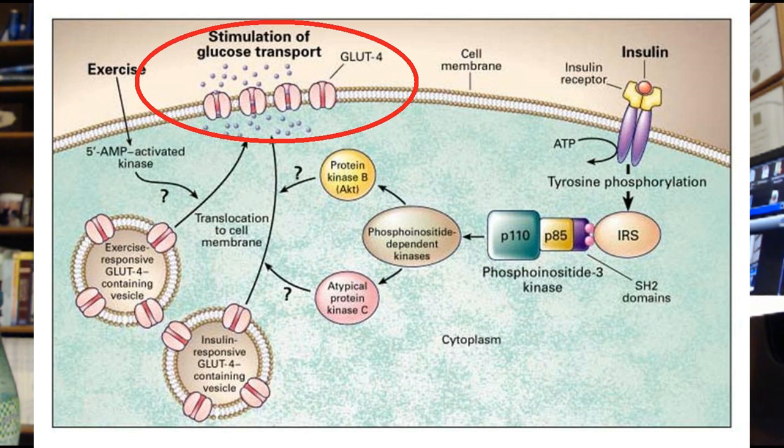Later on, after the glucose transporters get tired out, the kinesin-1 molecule comes along and brings them back into the interior of the cell, where they're stored in new vesicles and recharged. So there's dynein bringing them to the surface, kinesin-1 bringing them back in. Both these motor molecules are actually walking on the cytoskeleton of the cell — and this all took place because insulin landed in the receptor, as illustrated in the diagram.